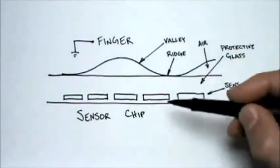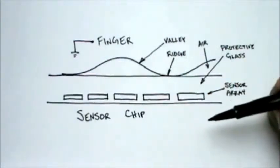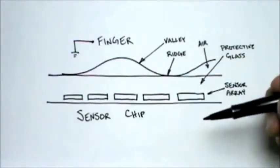In a nutshell, this is how it works. The sensor chip is built on a piece of silicon, the same type of silicon chip that computer processors are made on.